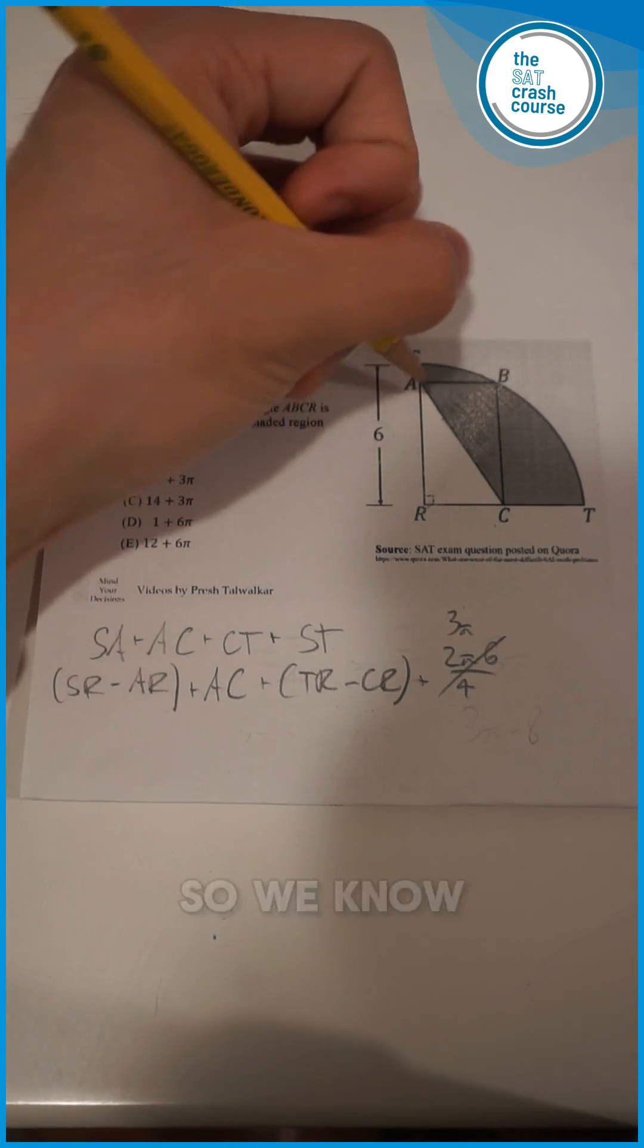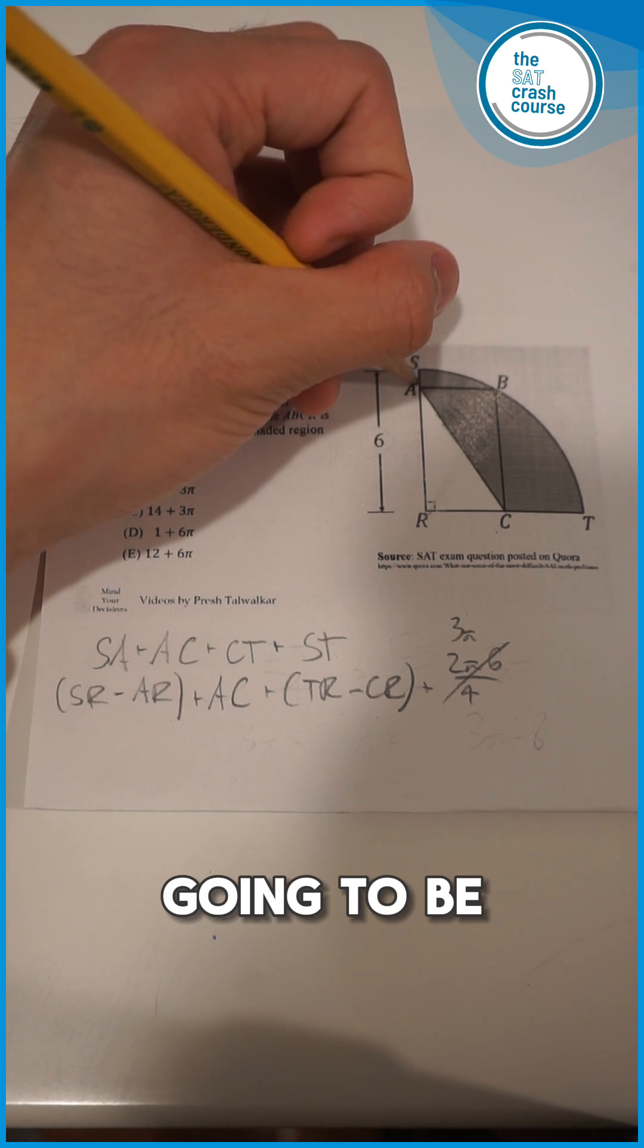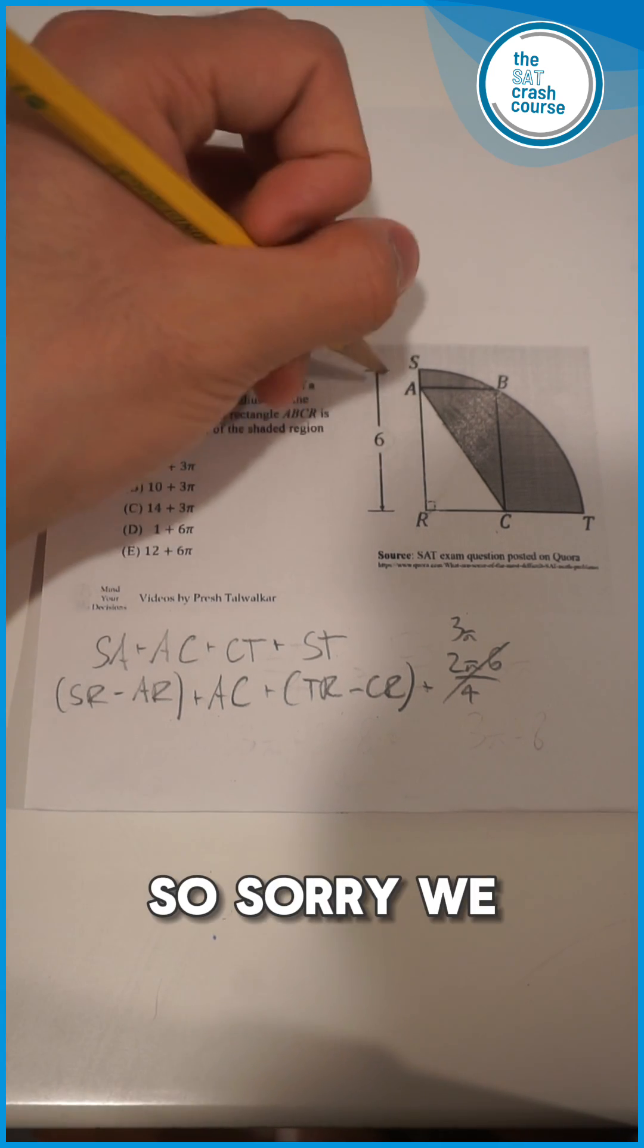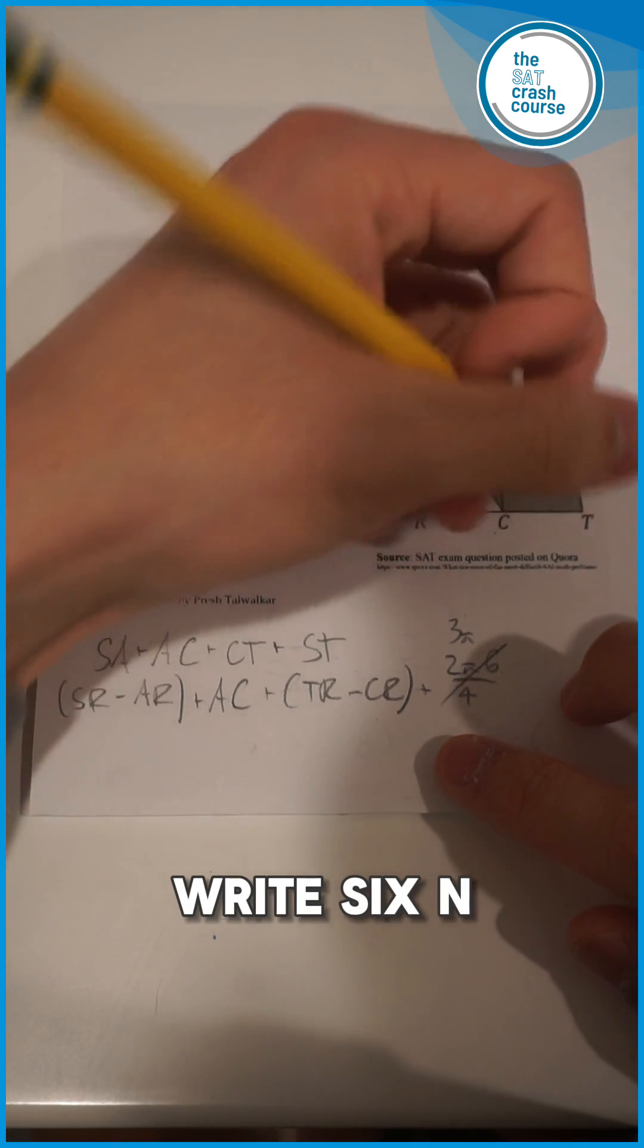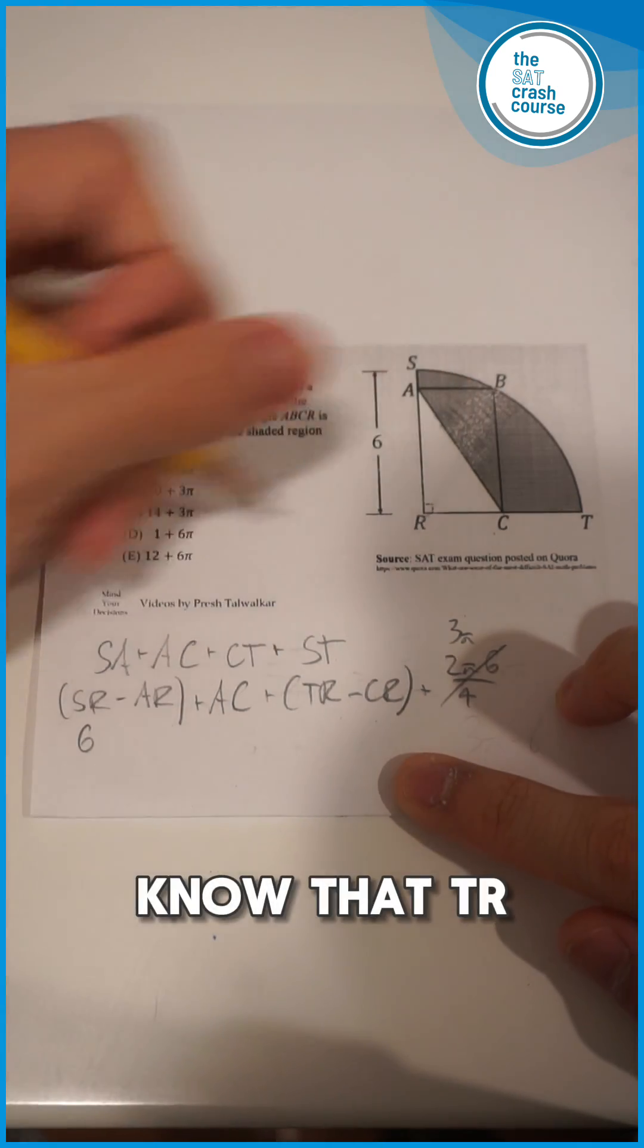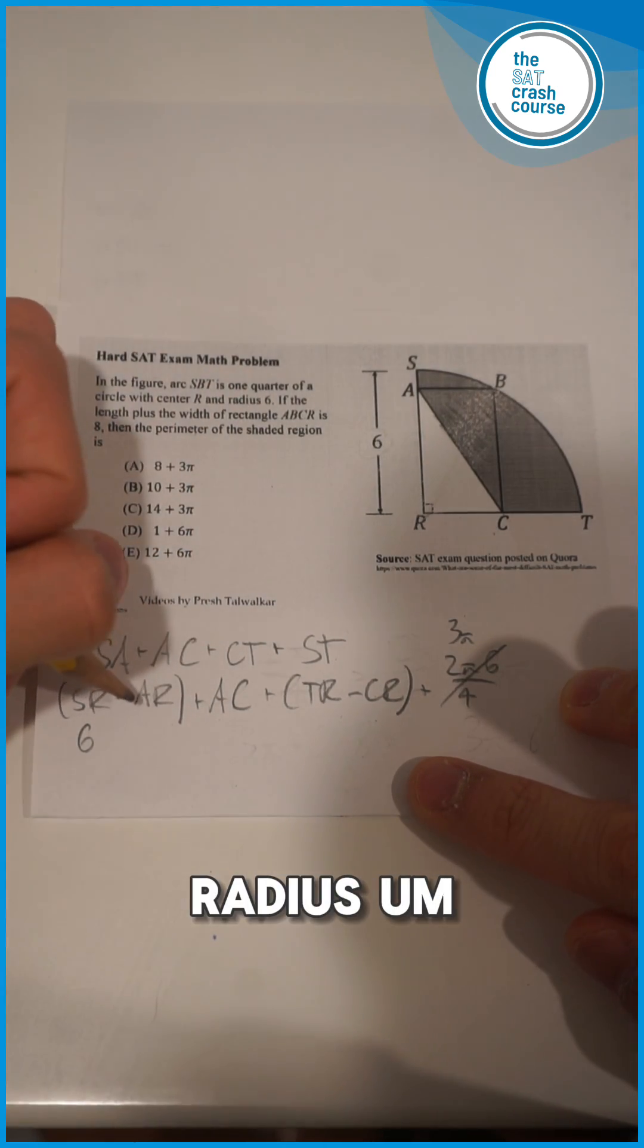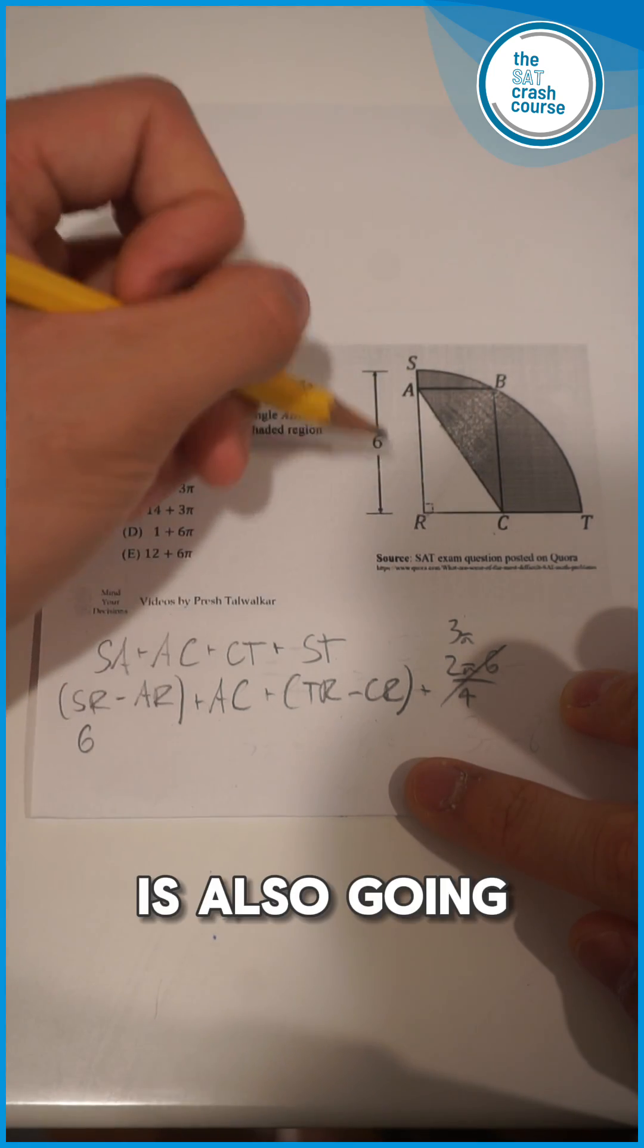Now SR minus AR, we know that SR is going to be 6, so we can write 6 in for that. And we also know that TR is 6, because that's the radius.